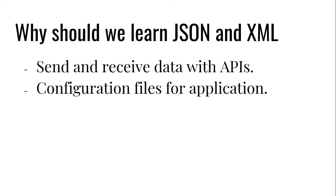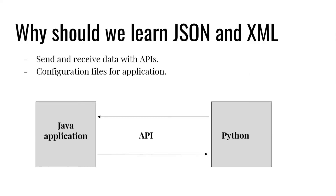Here is an example where we are using APIs. If you can see, on the left we have a Java application and on the right we have a Python application. These two are written in different languages, and if we want both of them to share information, we need a common format. We can use an API, and the API will use data formats like JSON and XML which both languages can understand.